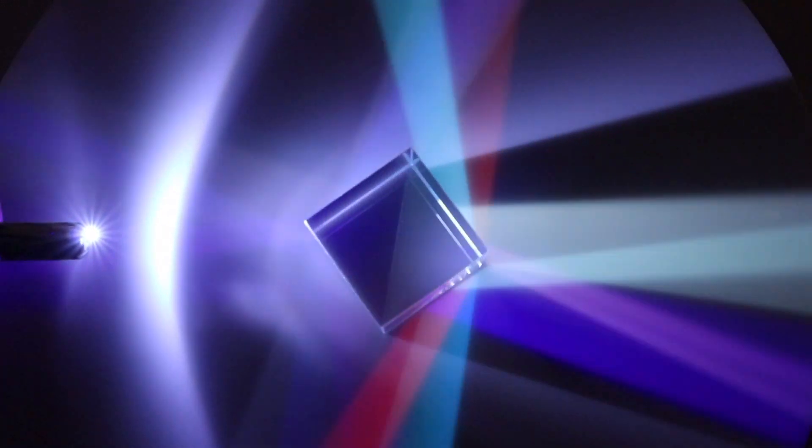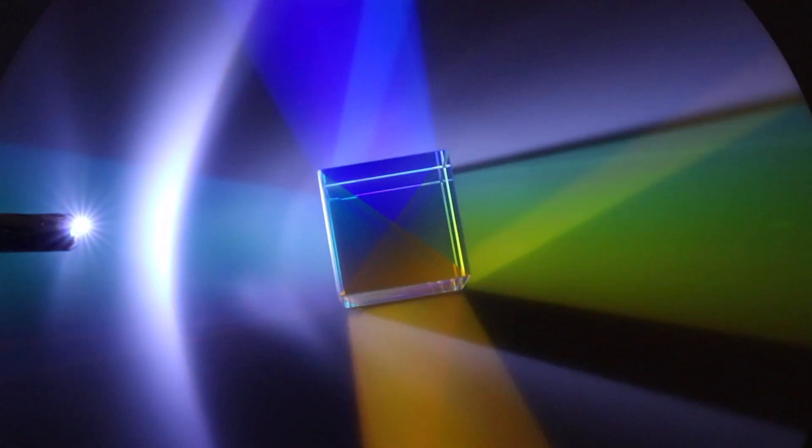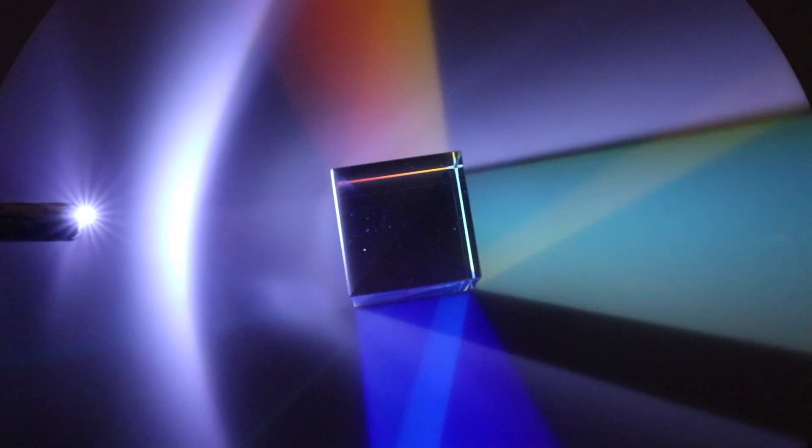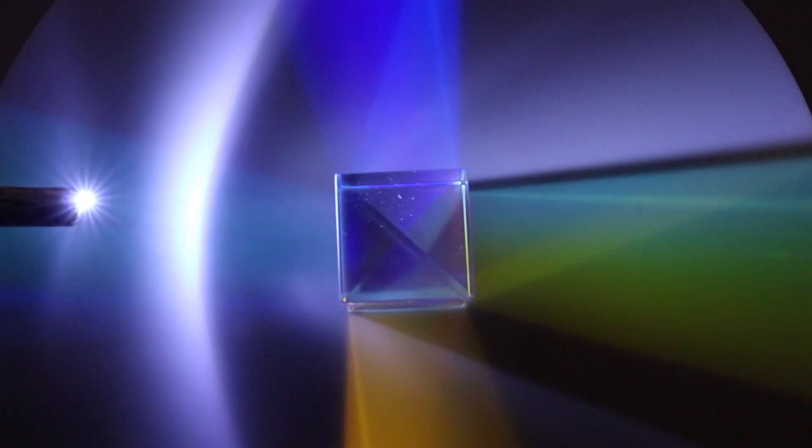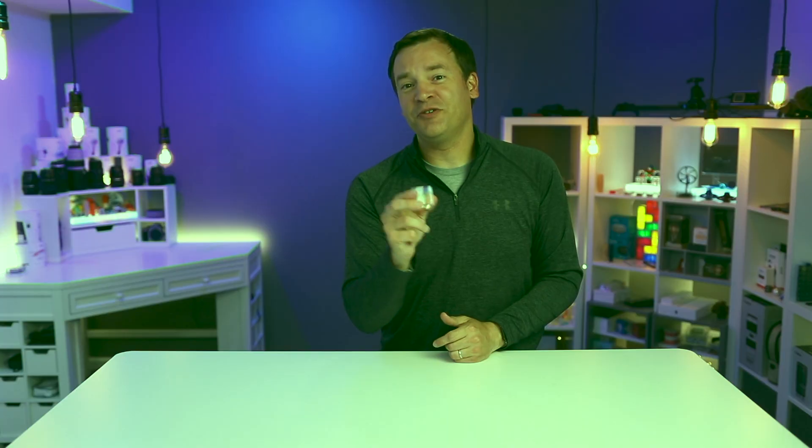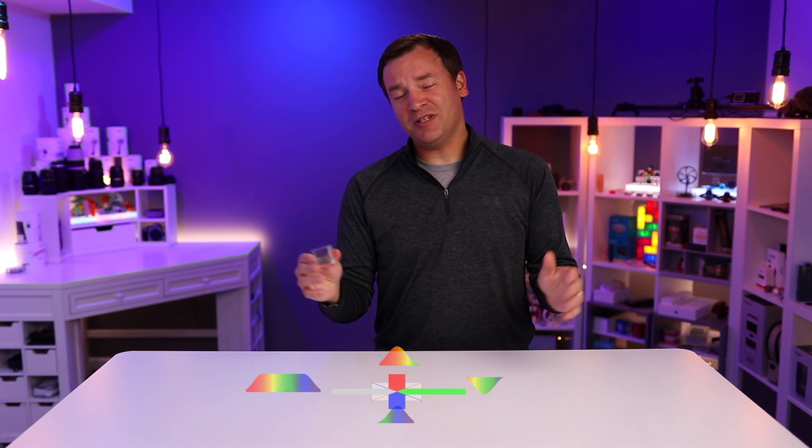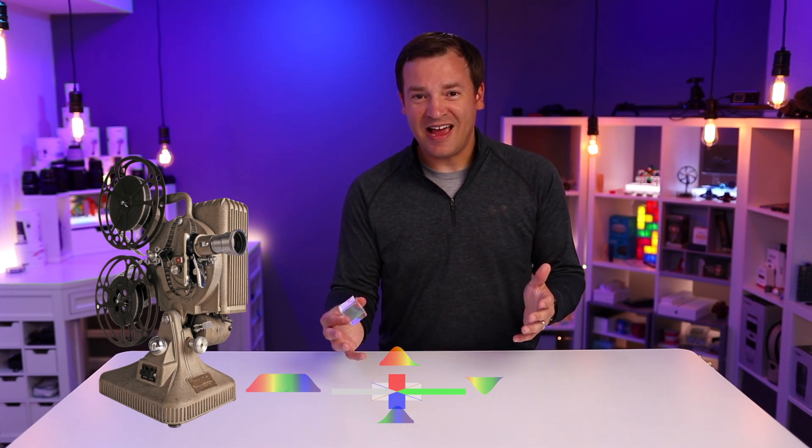This is why it's called a dichroic cube or trichroic cube, because it's using those filters to split it into three different colors, RGB: red, green, and blue. And this is used sometimes in projectors or cameras or different things like that.